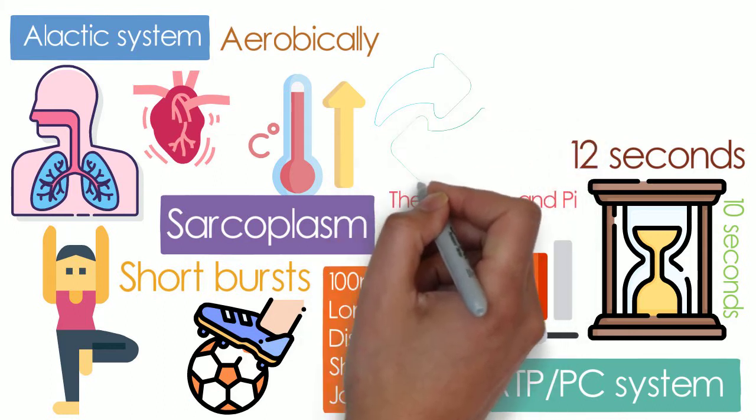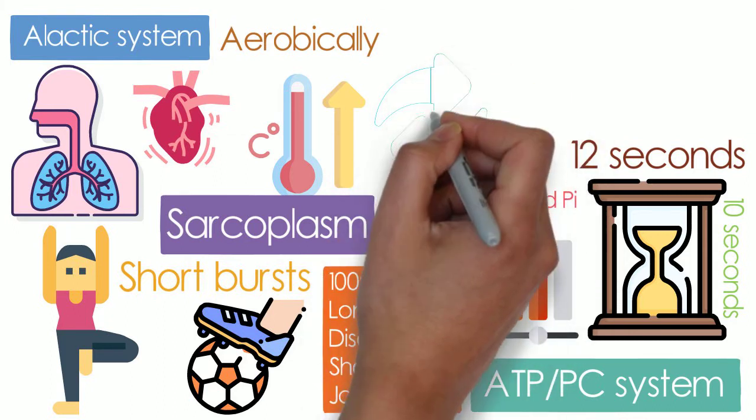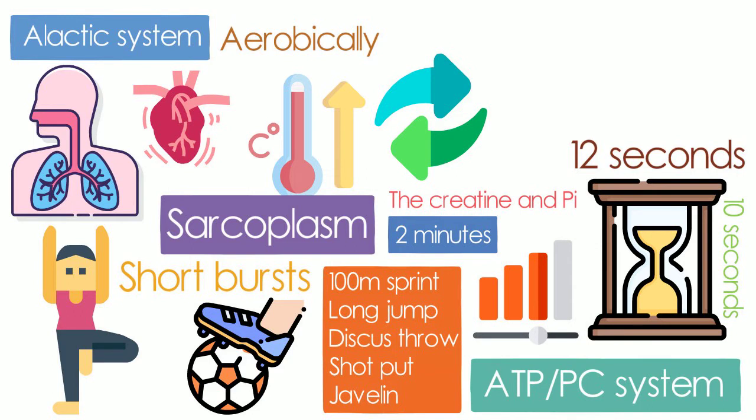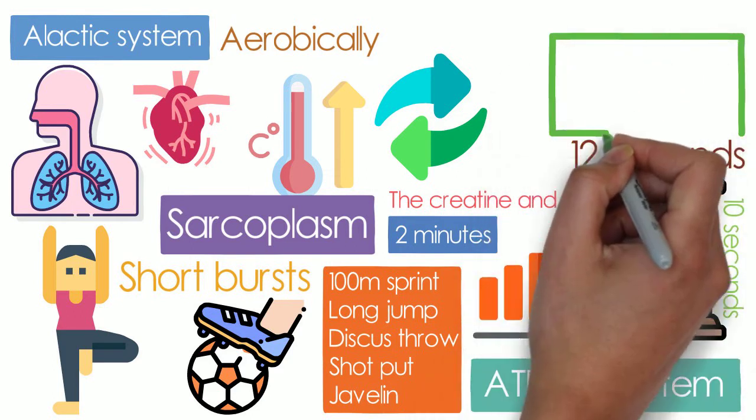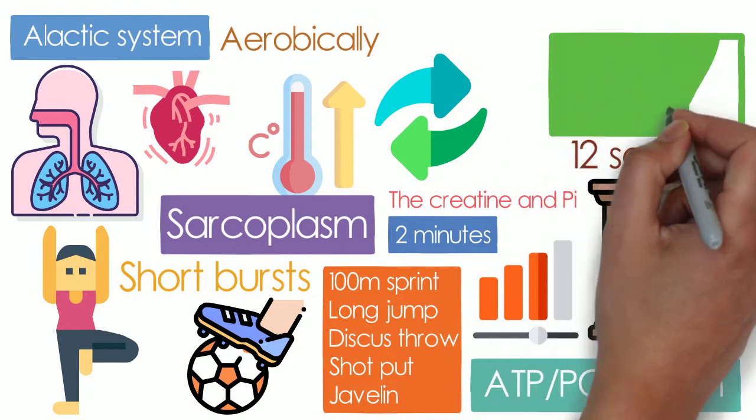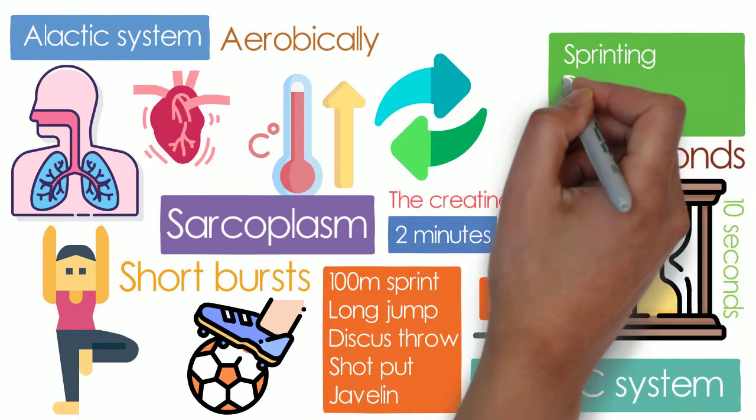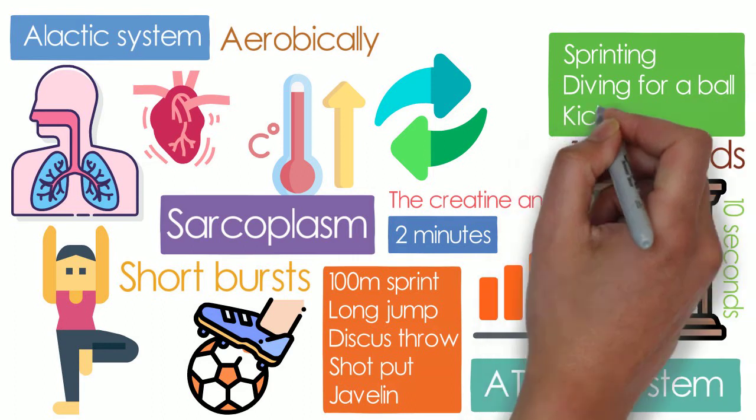The ADP can then be converted back to ATP, ready to be used for another short burst of energy using the energy from PC breakdown. This explains why players in a game can have numerous brief moments of sprinting, diving for a ball, or kicking a ball.